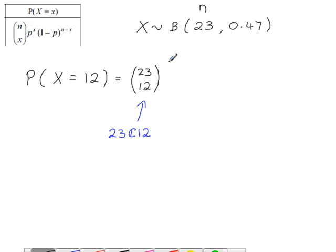That's multiplied by P to the power of X, so times 0.47 to the power of X. And X is 12, X equals 12.